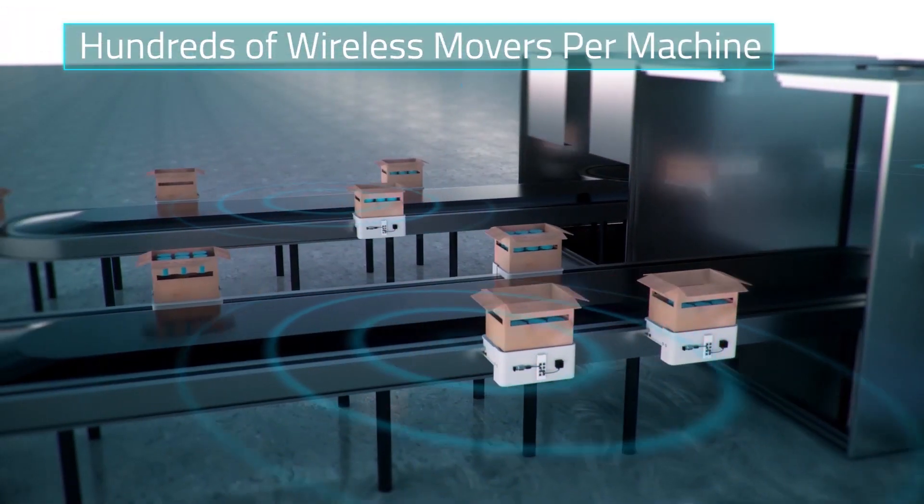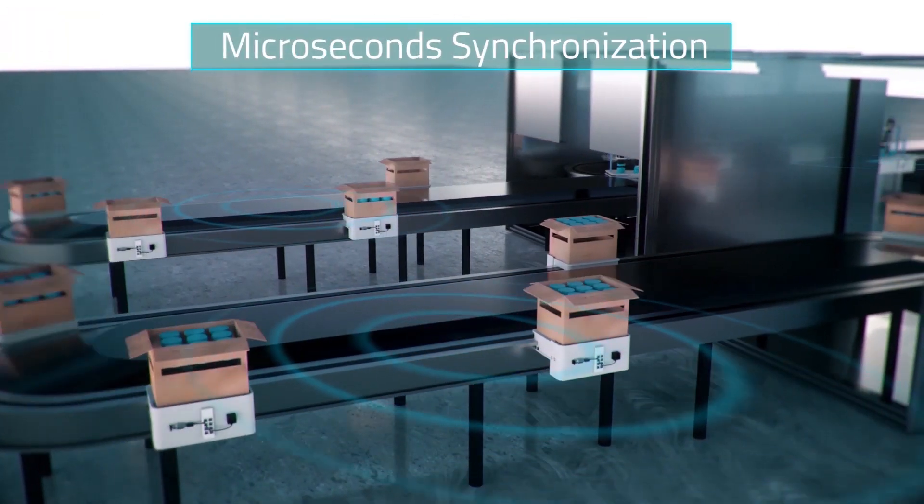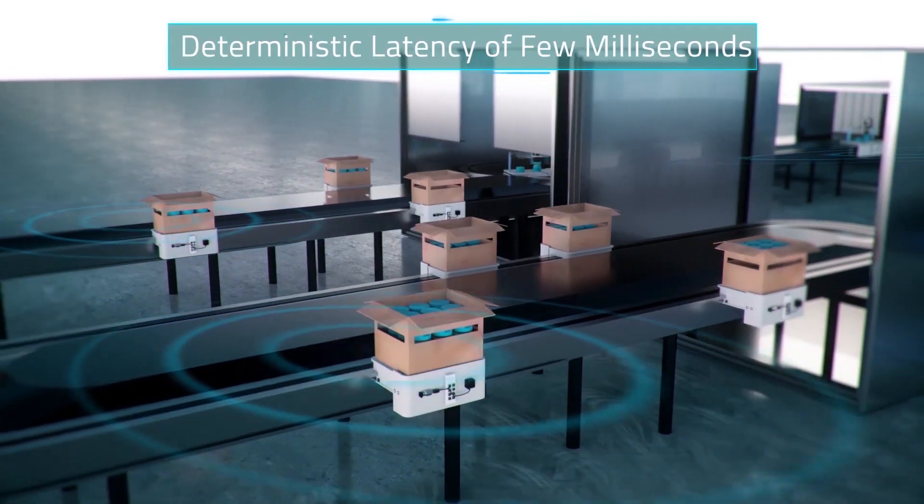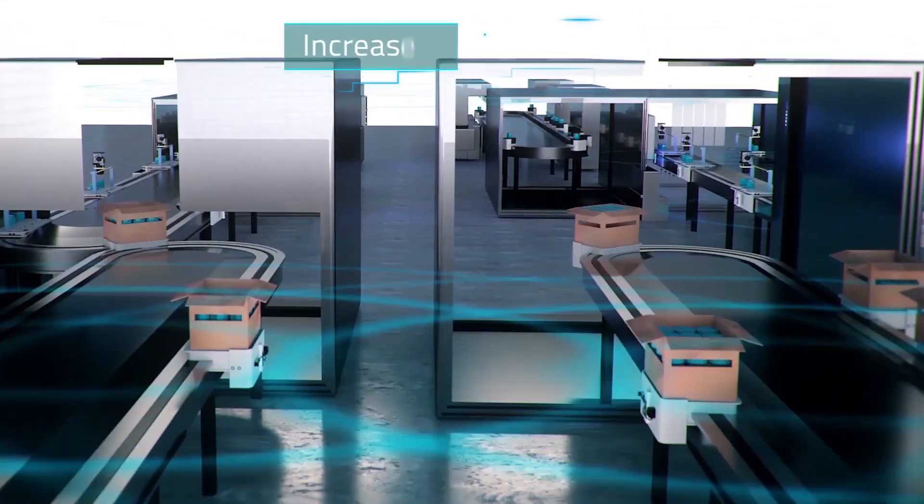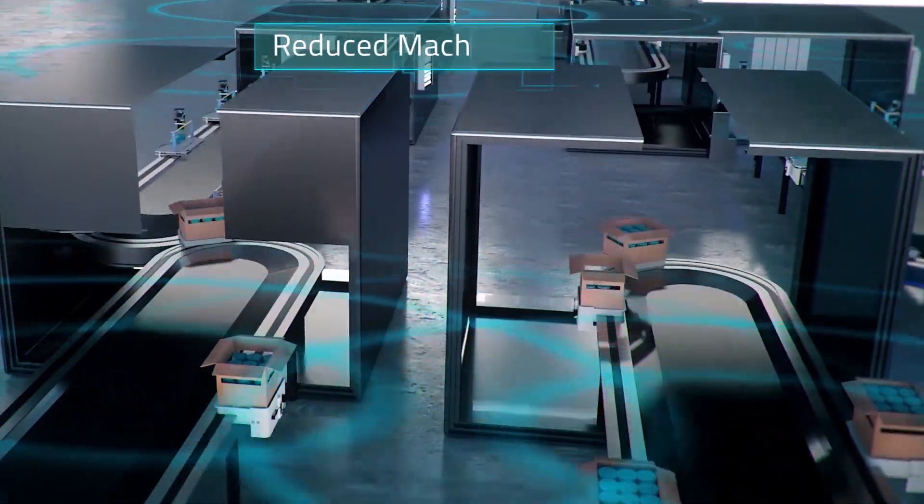Cortigo's IO-Link wireless solution is designed to meet these harsh demands with low latency, cable-grade reliability, and scalability to support communication on hundreds of movers within a single machine area.